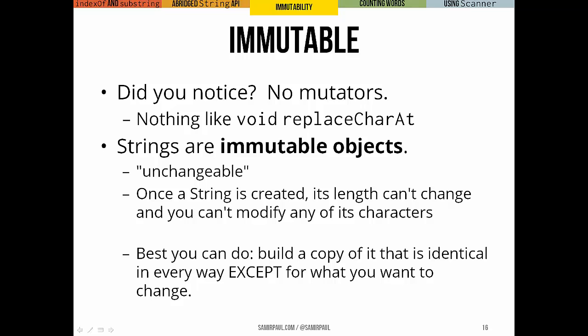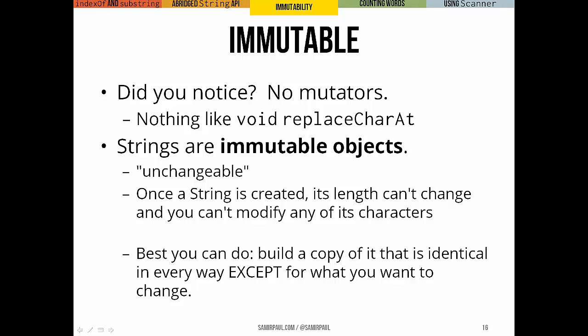Now, one thing you may have noticed is that there are actually no mutator methods. I didn't list a single mutator method in any of those on the previous slides, and there are none for strings. The reason for this is that strings are immutable objects. They're immutable objects, which really just means they're unchangeable. Once you make a string, you can't change its length and you can't modify any of its characters. All you can do is copy it to a new string, to a different string, and make changes in the copying process so that it looks different.